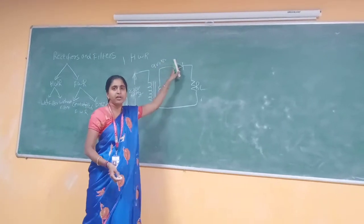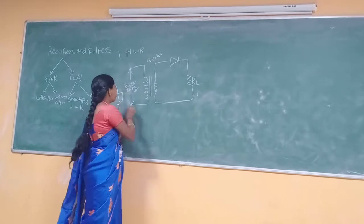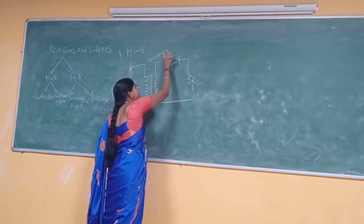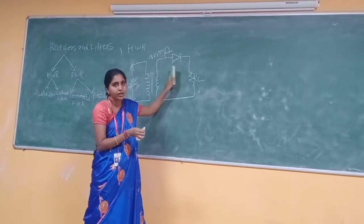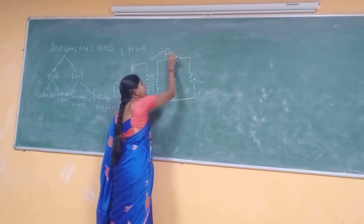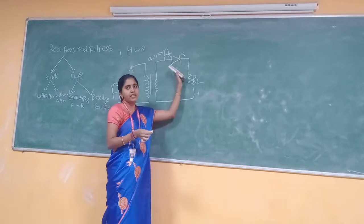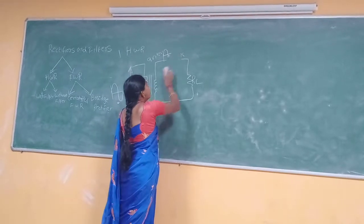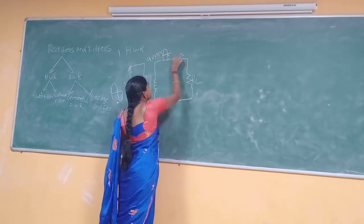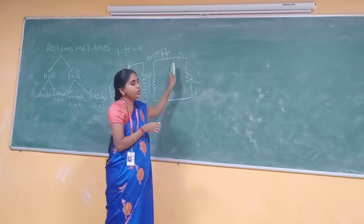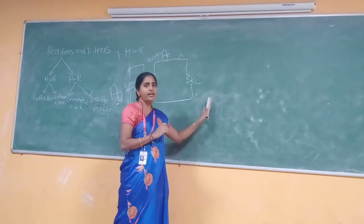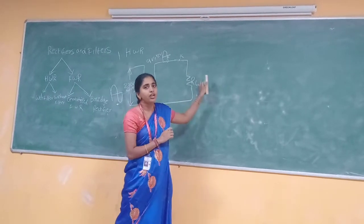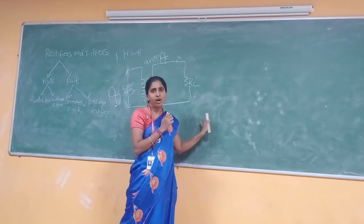That voltage will be obtained at the output of the transformer. When the positive half cycle is given to the diode — positive is given to the anode of the diode — the diode is having two terminals: first is the anode and second is the cathode. When positive is given to the positive of the diode, then the diode will be forward biased. So the output will appear across the load resistor RL. Whatever input you are applying at the transformer, that output will be appearing at the load resistor RL.